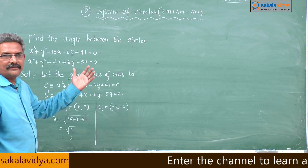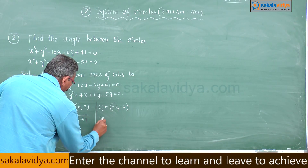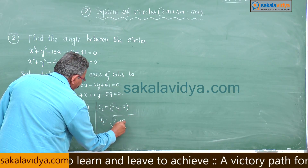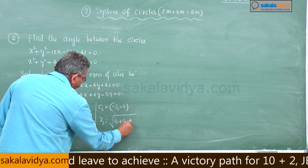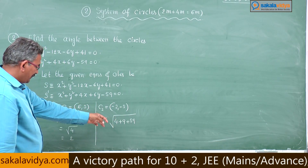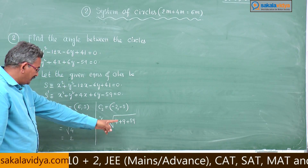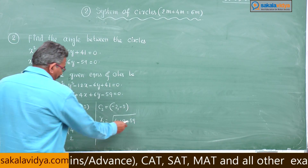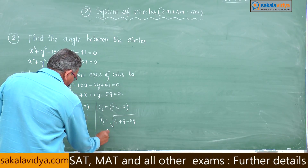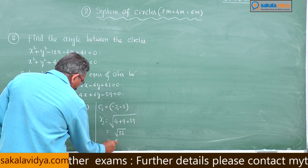Let us find out the radius of the second circle. r2 equals the square root of 4 plus 9 plus 59, which gives the square root of 72, equals 6 root 2.